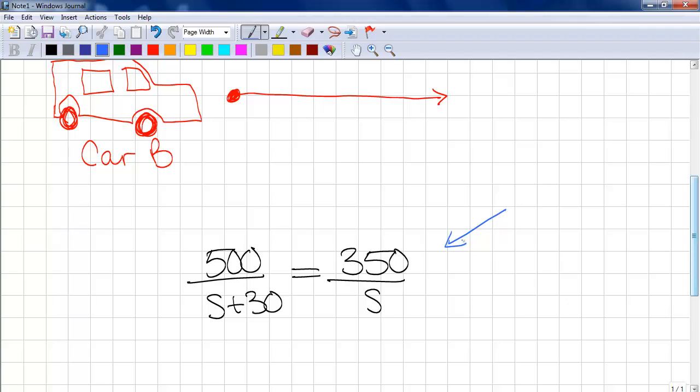The question is asking us to determine the average speed of each car to the nearest kilometer per hour. We can write this down to remember what exactly the question is asking.